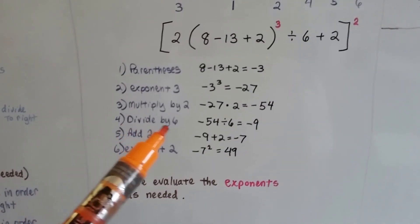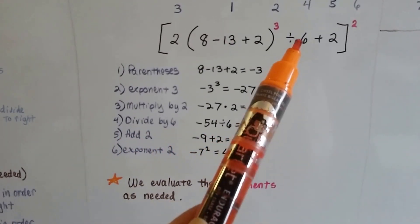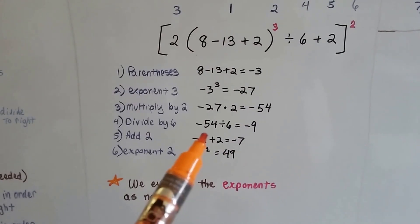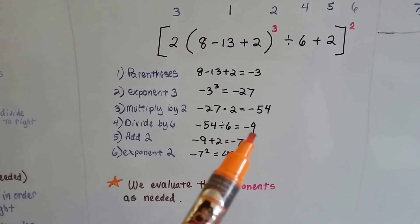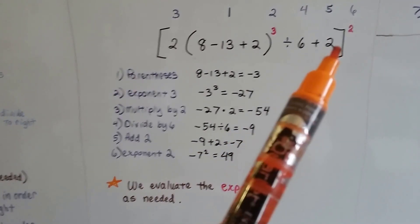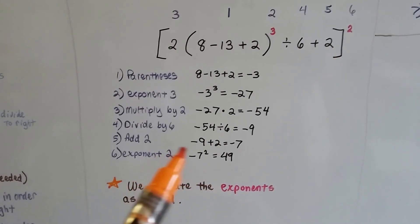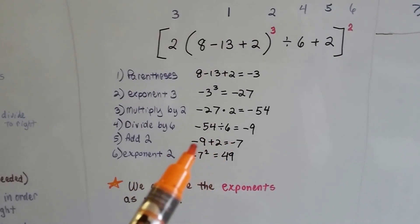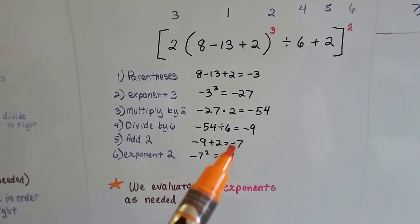Now the fourth thing we're going to do is divide by 6. Negative 54 divided by 6 is negative 9. Now we're going to add the 2. Negative 9 plus 2 is negative 7.